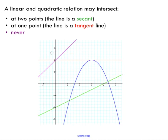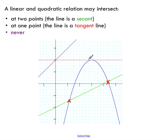A linear and a quadratic can intersect in a couple of different ways. I've got a blue parabola here showing the different ways a given line could intersect it. The first way is at two points — this is what we call a secant line. Another way is at one point, which we call a tangent line. This line happens to touch the quadratic at exactly one point.